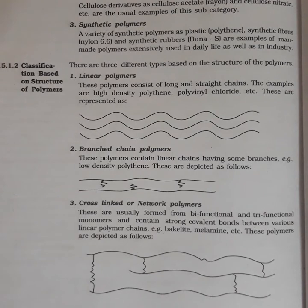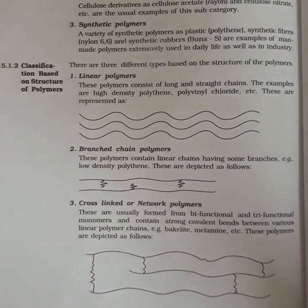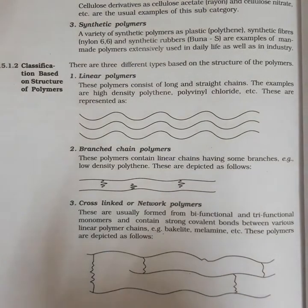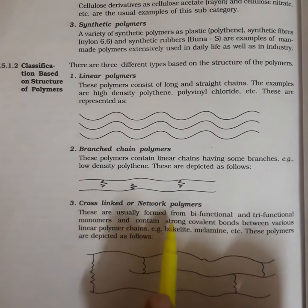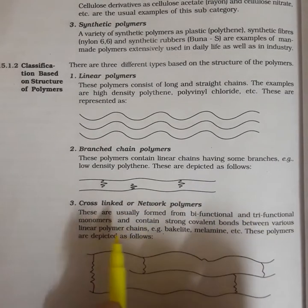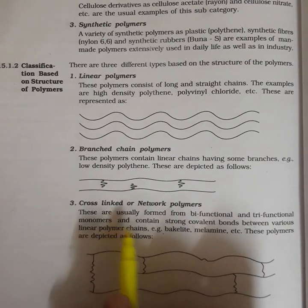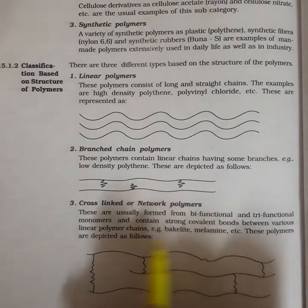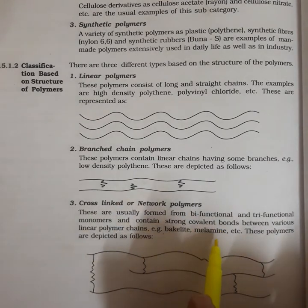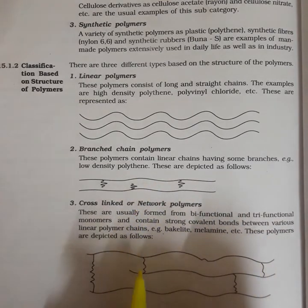Cross-linked or network polymers are used in combs, chairs, and tables. They are usually formed by bifunctional or tri-functional monomer units and contain very strong covalent bonds. Examples of cross-linked polymers include Bakelite and melamines.